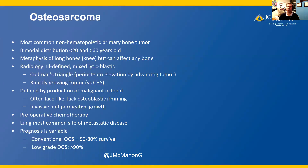Osteosarcoma is the most common non-hematopoietic primary bone tumor with a bimodal distribution in patients younger than age 20 and greater than 60 years of age. It often occurs in the metaphysis of long bones around the knee, but can affect any bone. Radiographically, osteosarcomas are generally ill-defined with mixed lytic and blastic features. You'll often see a Codman's triangle, like we saw in our patient here, where the periosteum is lifted by the advancing tumor.